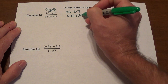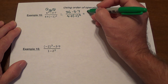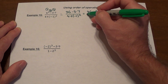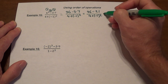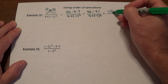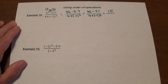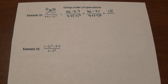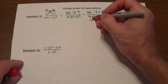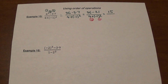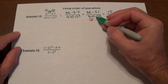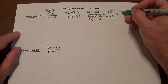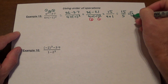Working the numerator: 6 squared is 36, then 3 times 7 is 21, so 36 minus 21 is 15. Now the denominator: the exponent is done first — negative 1 squared is negative 1 times negative 1, which is 1. Then 4 plus 1 is 5. Finally, 15 divided by 5 gives us 3.